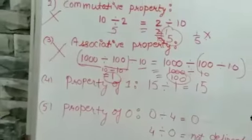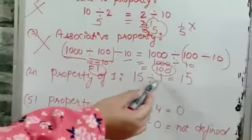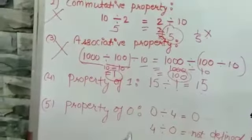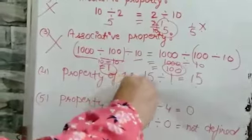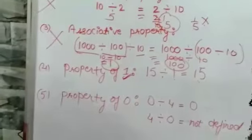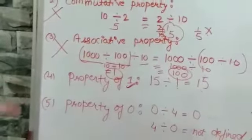Coming to the next property, property of 1. 15 divided by 1 will give the number itself, that is 15. Yes, that means 1 is the identity number for division, as in multiplication also, multiplicative identity was 1. So this identity is also the same. 1 is identity for division also.